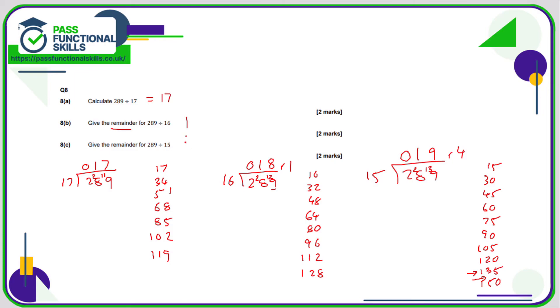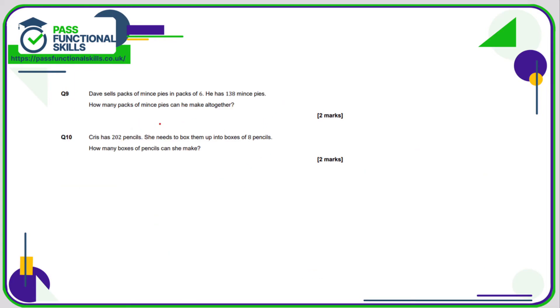Question number nine, all we need to do is divide 138 by six. One divided by six, zero, carry the one over. 13 divided by six is two, remainder one. 18 divided by six is three. So 23 packs.